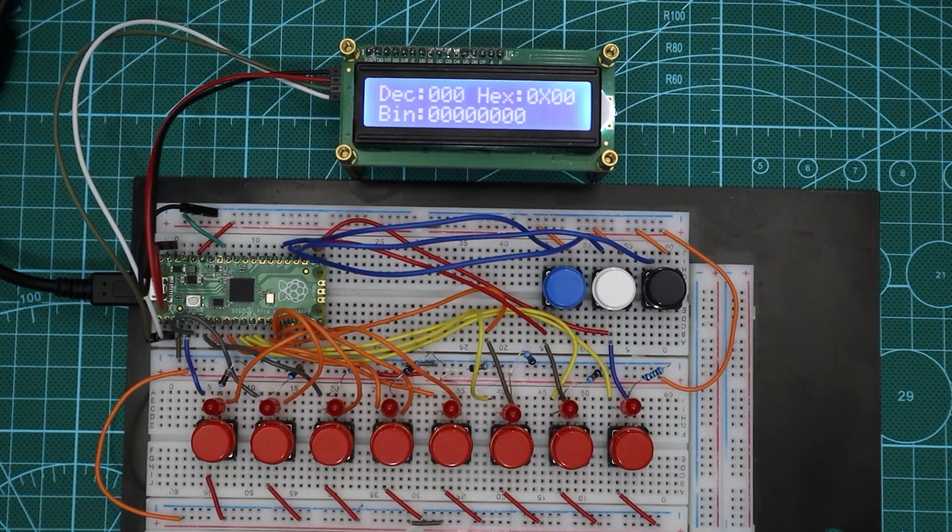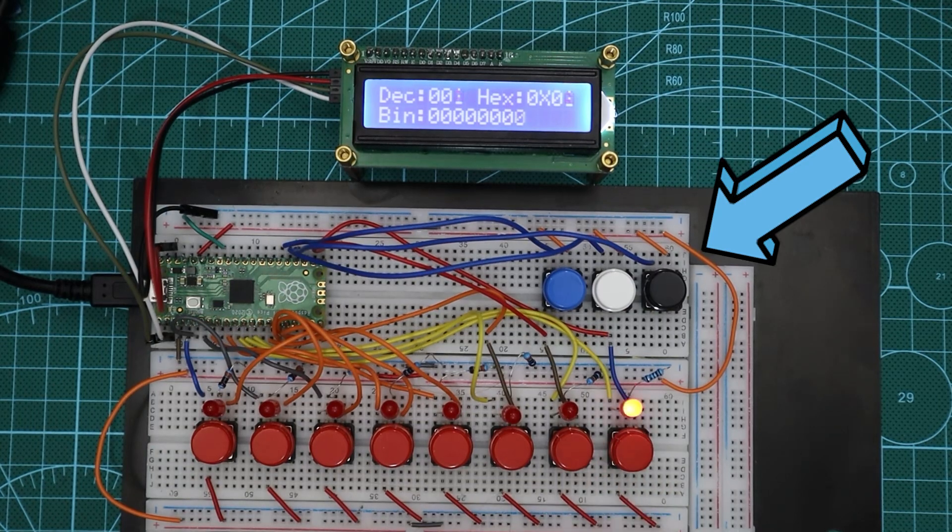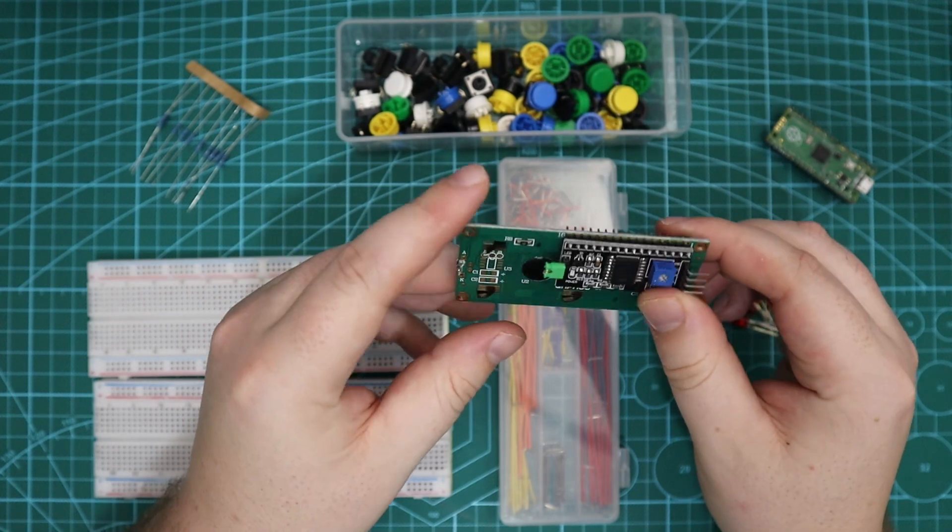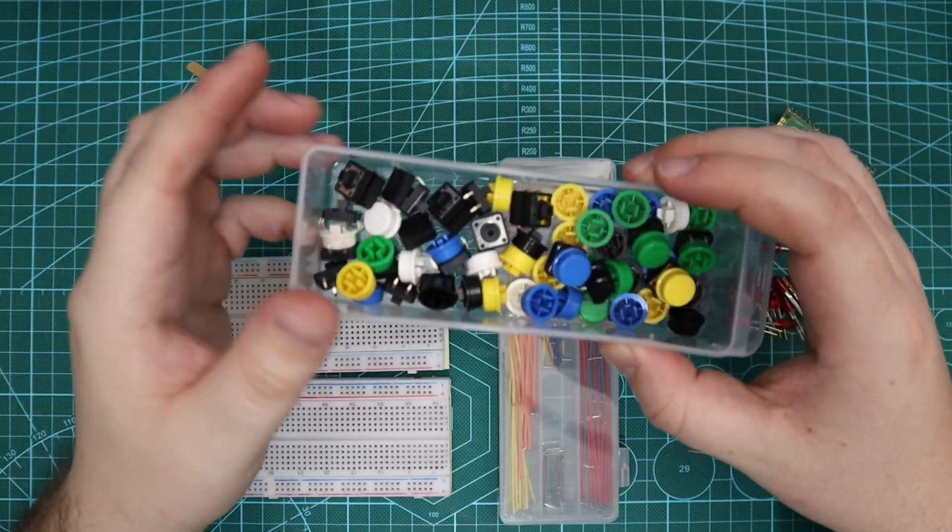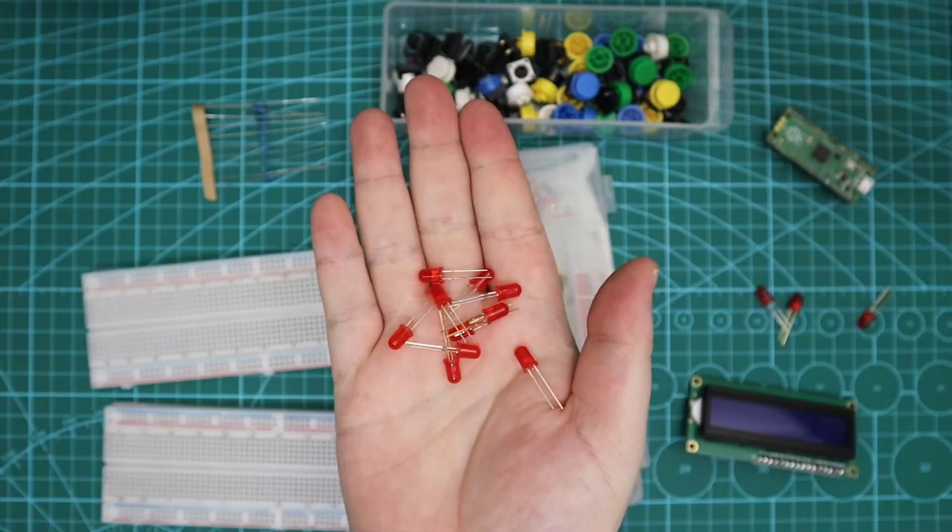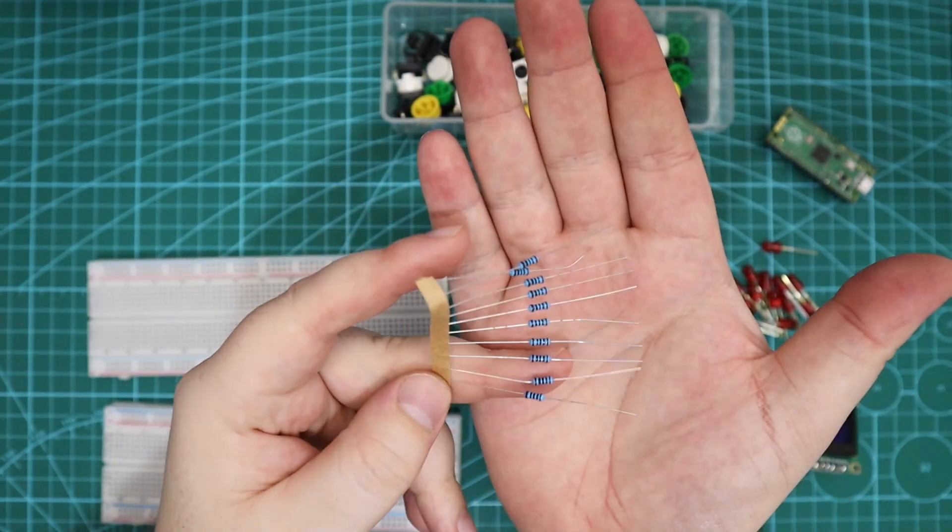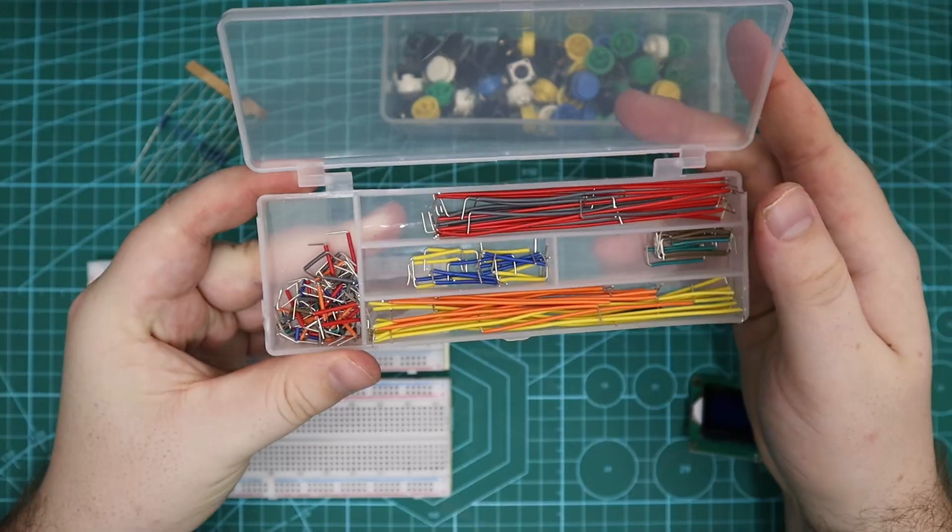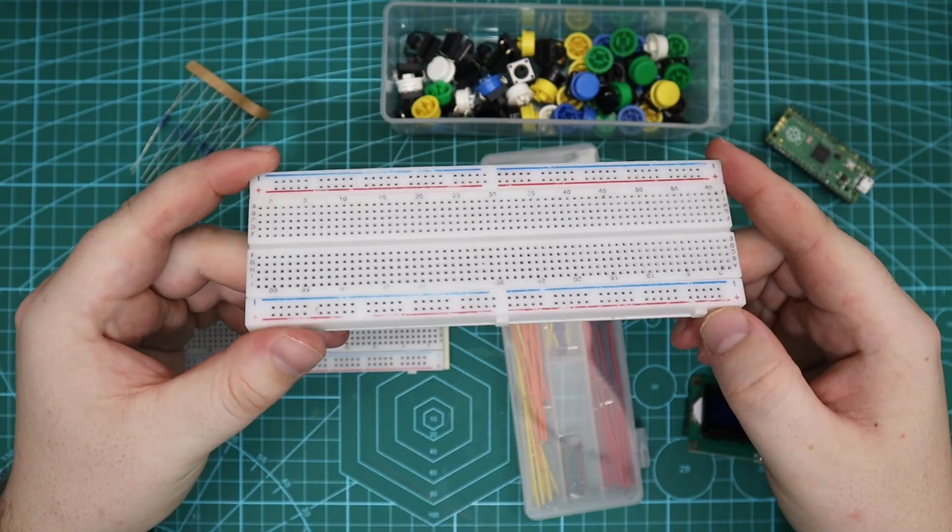To follow along with this project on a breadboard you will need the following components: a Raspberry Pi Pico, 16 by 2 character LCD display with I squared C, 11 12 by 12 tactile push buttons, 8 LEDs, 8 resistors which you can pick values from 330 to 1 kilo ohm, and a lot of wires. I have used 2 breadboards here.